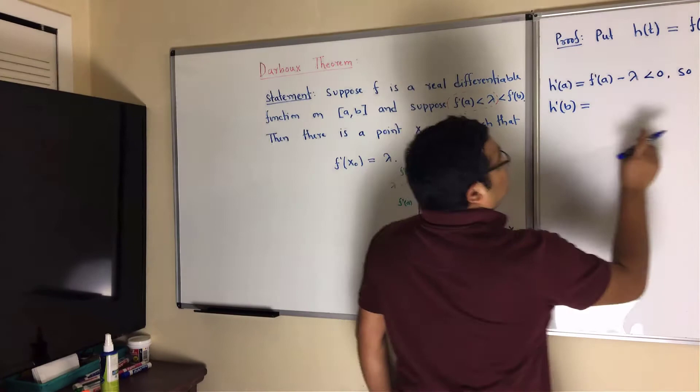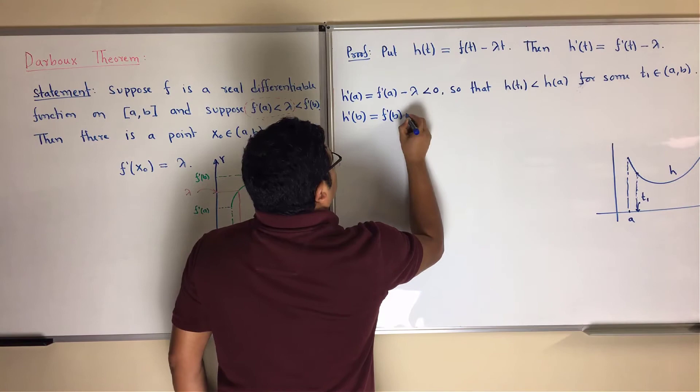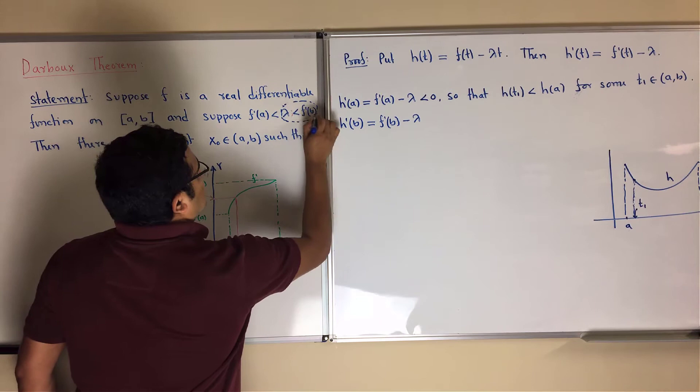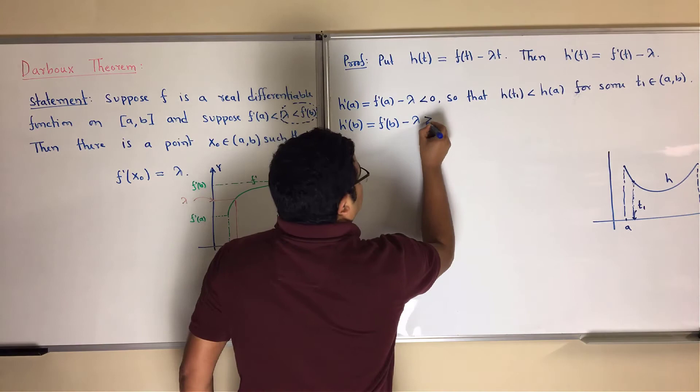Similarly, h prime of b equals f prime of b minus lambda. From the given condition, f prime of b minus lambda is greater than 0, so h prime of b is greater than 0.